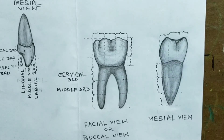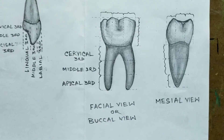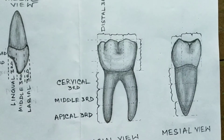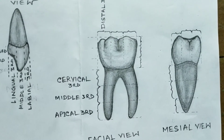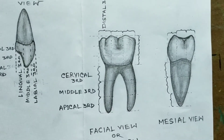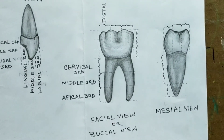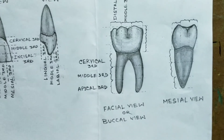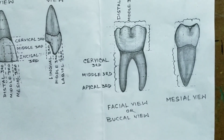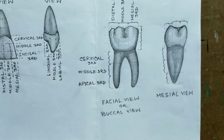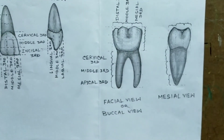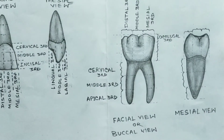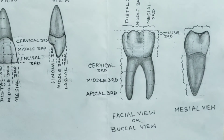Crowns may be divided into thirds in three directions. Here we see distal third, middle third, and mesial third — this is the mesiodistal direction.